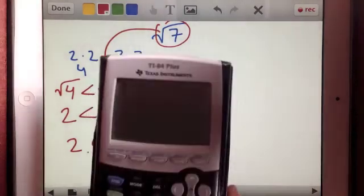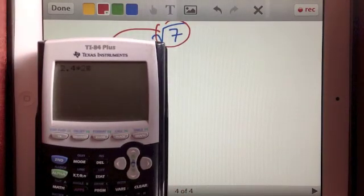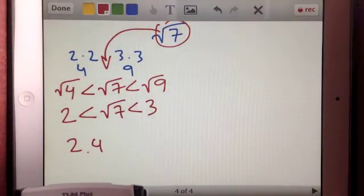And again, I'll use the calculator just to speed up the process. If I did 2.4 times itself, 2.4, that would get me 5.76. That's not really all that close.